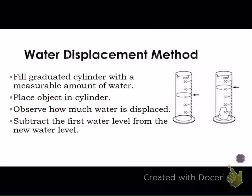Here is an example of the displacement method. First step would be to fill the graduated cylinder to a measurable amount of water. We are going to use 30 milliliters. Then we place the object in the cylinder, so here's our rock inside the cylinder. And we redo the volume with the rock and water, and it's 40 milliliters. We're then going to subtract the first water level from the new water level. So our new water level is 40 milliliters, minus our 30 milliliters. And we're going to get a volume for the rock of 10 milliliters.